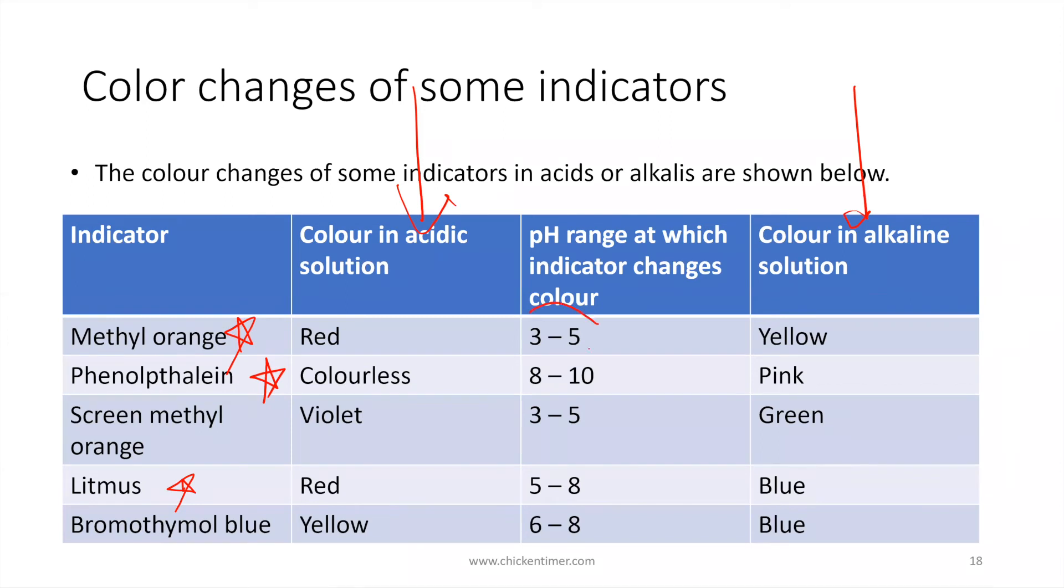But you notice there's a number down here, pH range at which the indicator change color. So let me draw: 0, 3 to 5, 14. What happens is it's red here from 0 to 3 is red, and then here is some very complicated color, not red and not yellow, it's a bit of a mix. From 5 onwards is yellow. You might see that the acid range is actually very small and the alkaline range is very big.